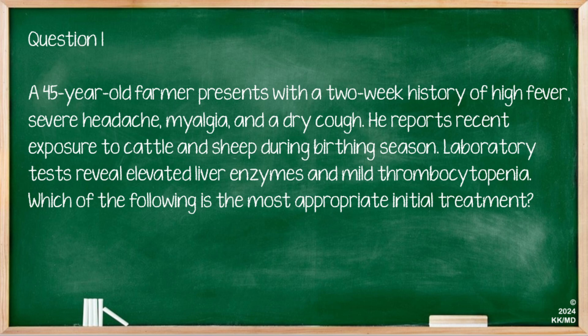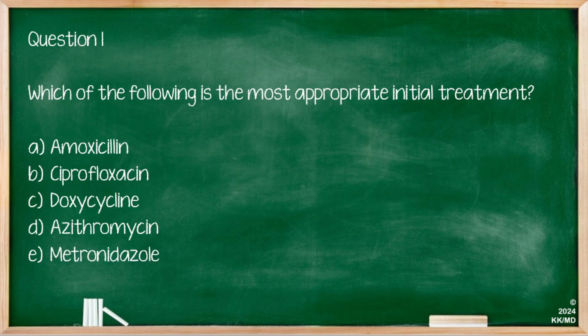Let's try a question. A 45-year-old farmer presents with a two-week history of high fever, severe headache, myalgia and a dry cough. He reports recent exposure to cattle and sheep during birthing season. Laboratory tests reveal elevated liver enzymes and mild thrombocytopenia. Which of the following is the most appropriate initial treatment? The options are amoxicillin, ciprofloxacin, doxycycline, azithromycin or metronidazole. The correct answer is doxycycline for the treatment of Coxiella burnetii, which this certainly seems to be in this vignette, given all of the symptoms and the time frame of two weeks.